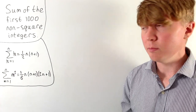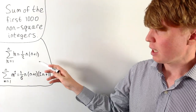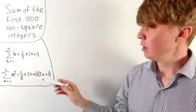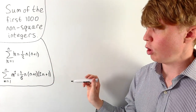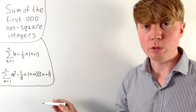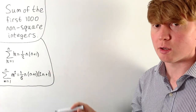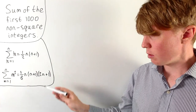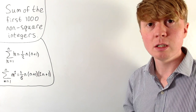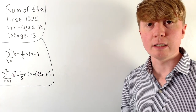First, the sum of all consecutive integers from 1 up to n has a nice formula: 1 + 2 + 3 + … + n = (1/2)n(n+1). Then we have a formula for 1² + 2² + 3² + … + n² in terms of n. This will be really useful because it tells us what we need to subtract so that we don't include the sum of all the square numbers in our calculation.